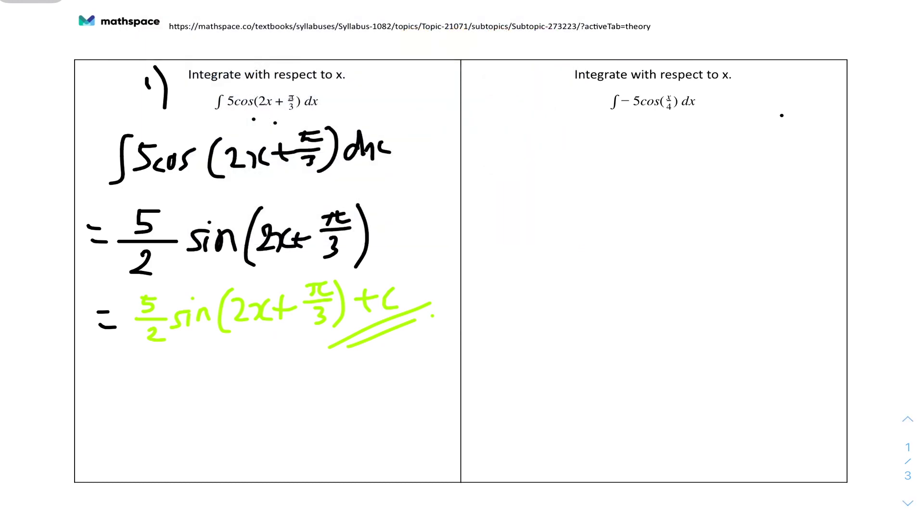Number 2, integrate with respect to x of this function right here. Let's just rewrite it: the integral of minus 5 cos(pi x over 4) dx. I'll just isolate the constant first.